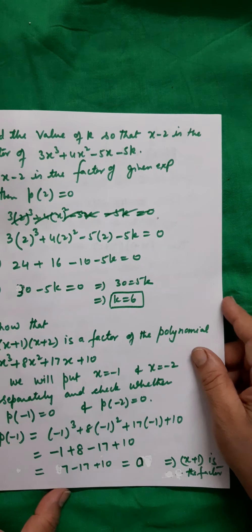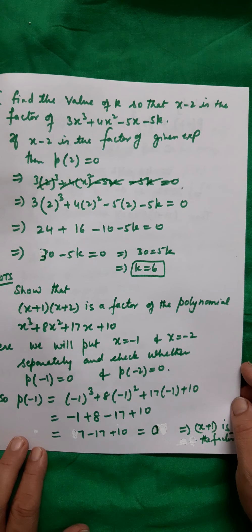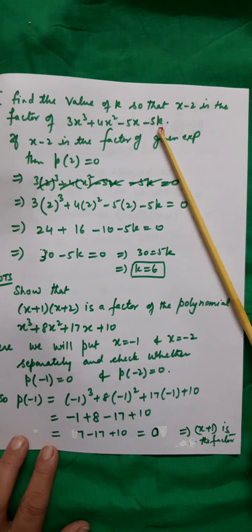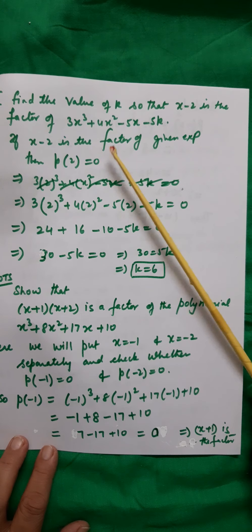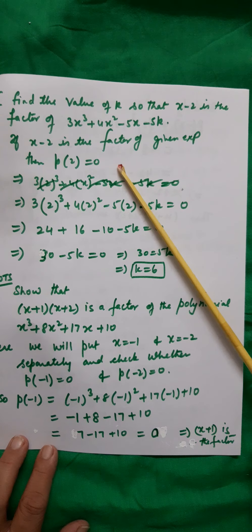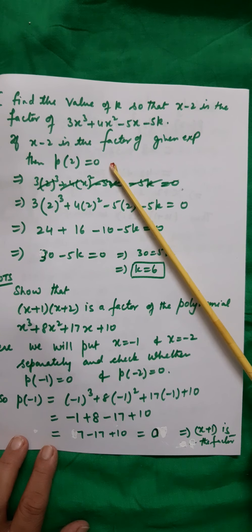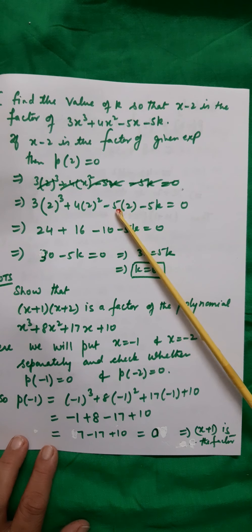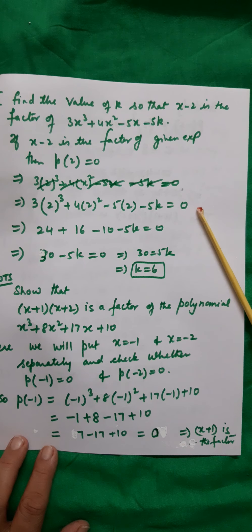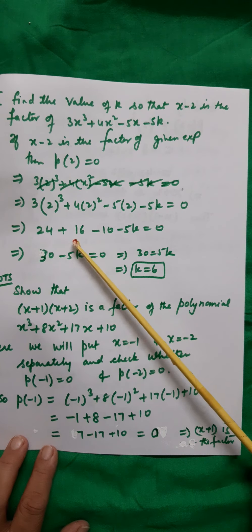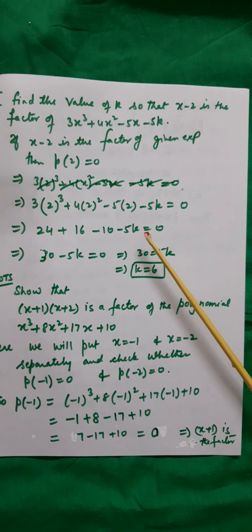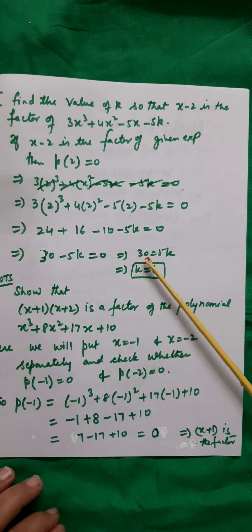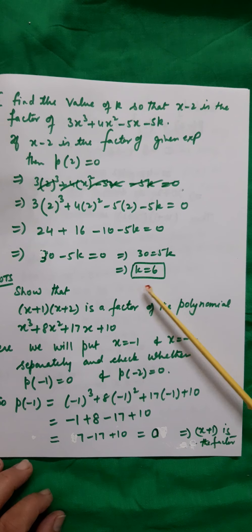Find the value of k so that (x − 2) is a factor of 3x³ + 4x² − 5x − 5k. If (x − 2) is a factor, then p(2) = 0. So 3(2)³ + 4(2)² − 5(2) − 5k = 0, giving 24 + 16 − 10 − 5k = 0, which simplifies to 30 − 5k = 0, so 5k = 30 and k = 6.